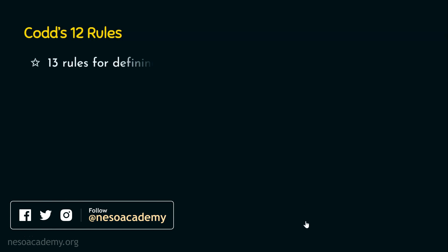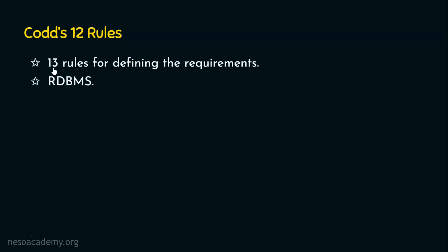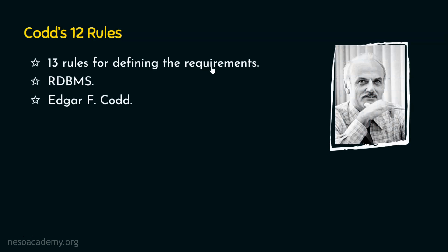Codd's 12 rules are a set of 13 rules for defining certain requirements. If a database management system is considered to be a relational database management system — simply RDBMS — then it must satisfy all these 13 rules. These 13 rules were proposed by the English computer scientist Edgar Frank Codd, who is considered to be the pioneer of the relational model for databases.